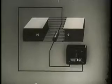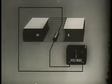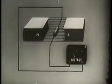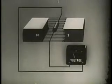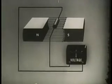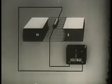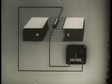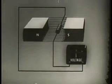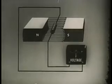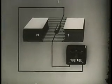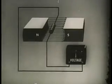Moving the conductor up through the field produces the opposite deflection of the needle — the EMF has now changed direction. Moving the conductor back and forth with the field does not make the needle of a voltmeter deflect; there is no EMF because the conductor is not cutting the field.